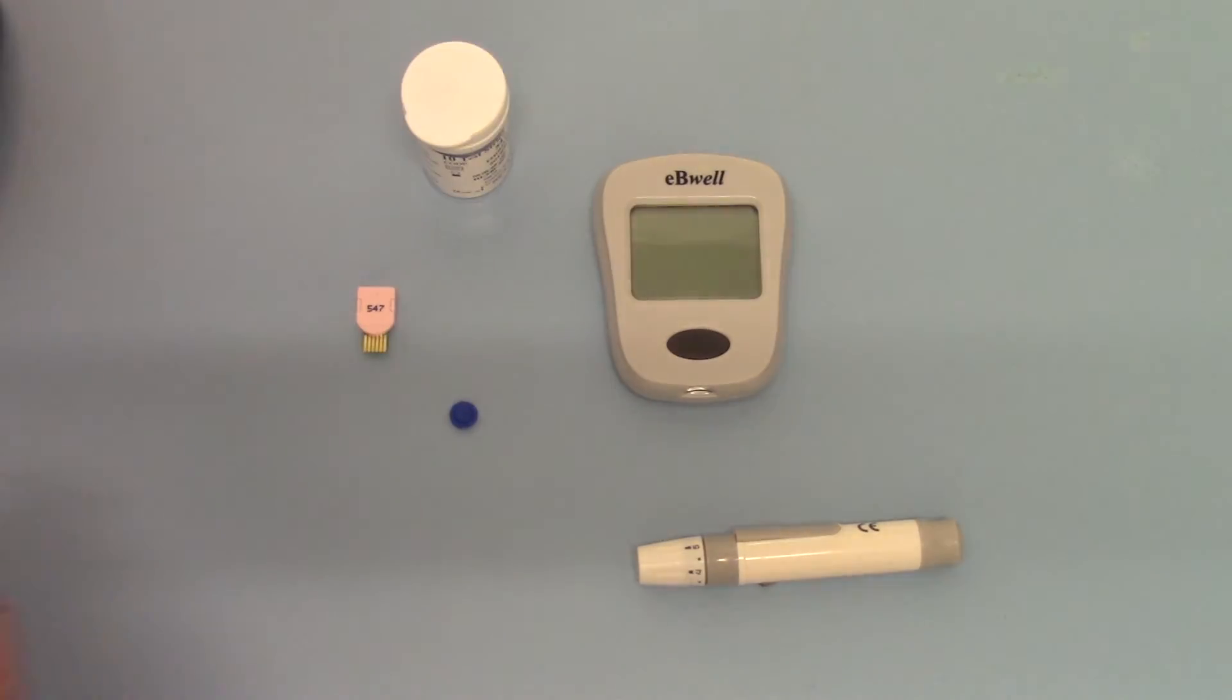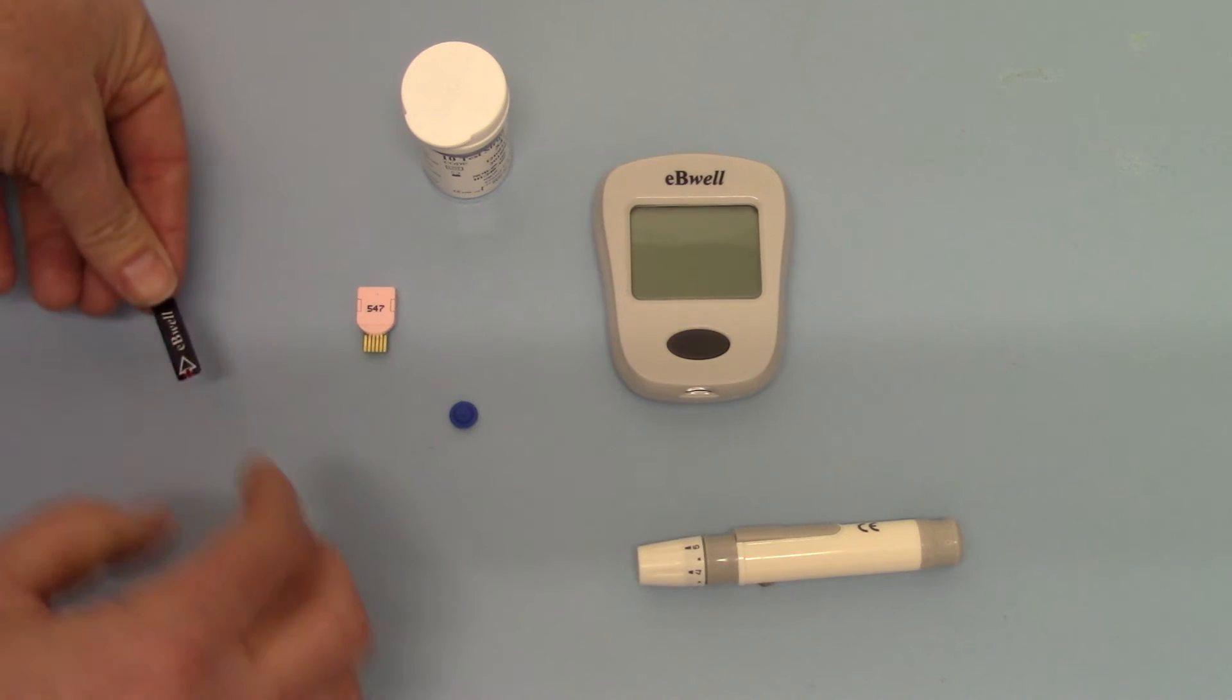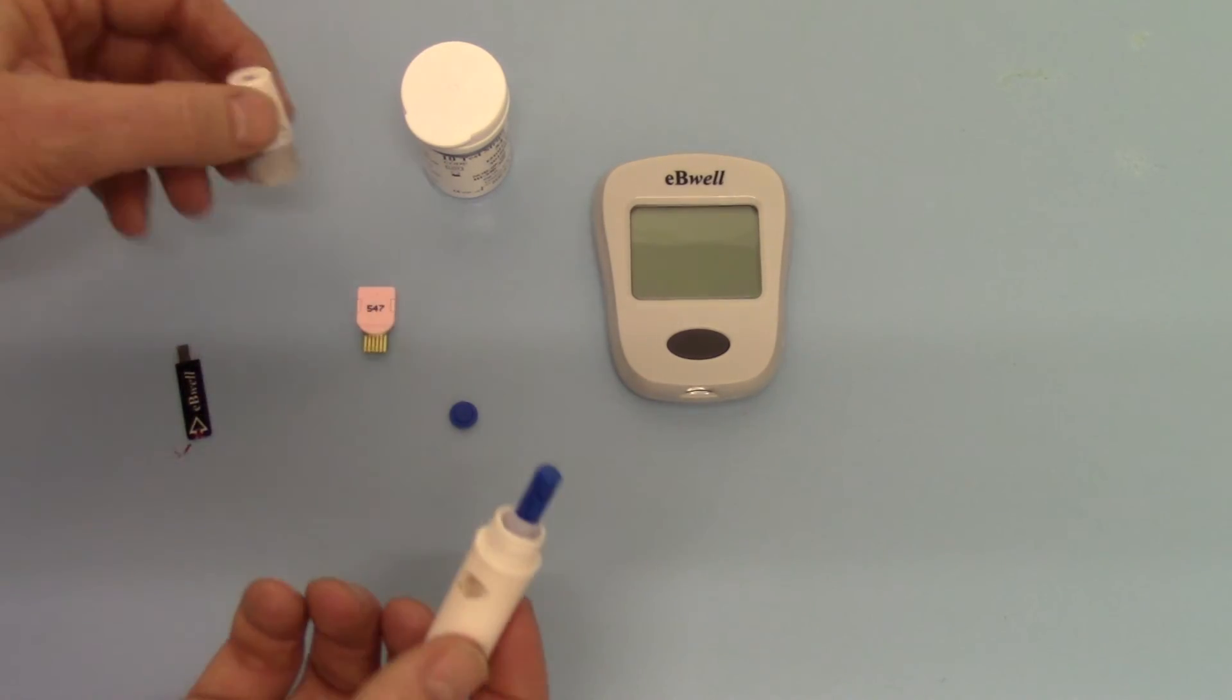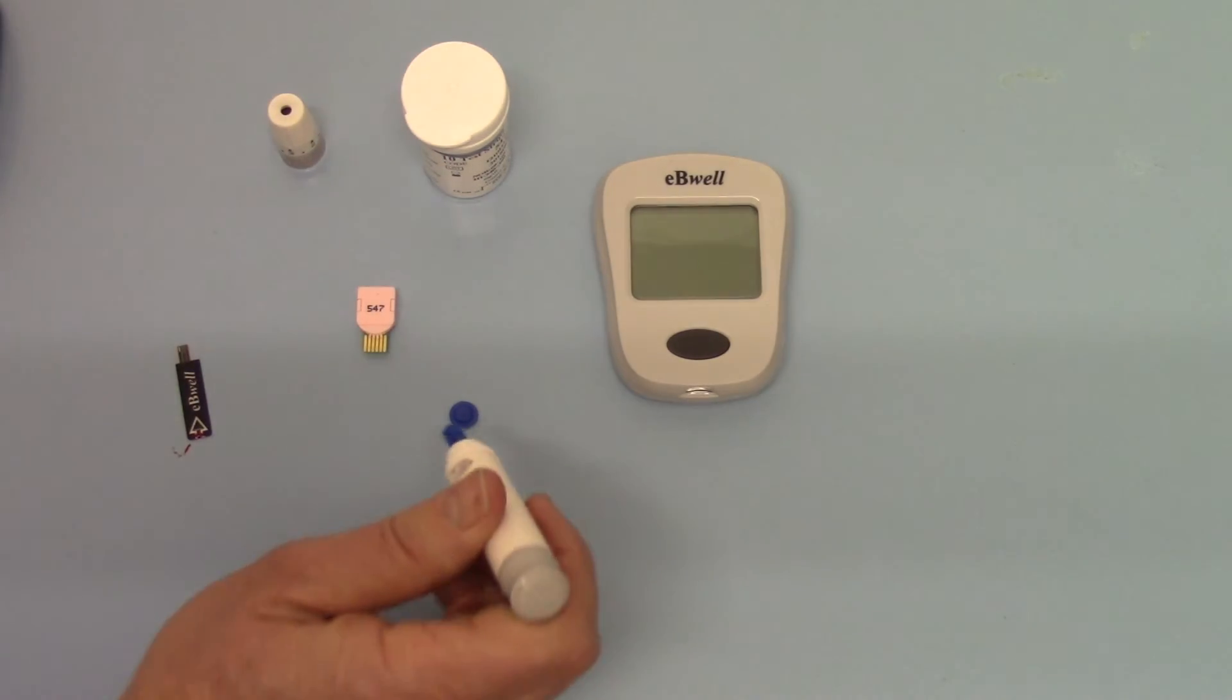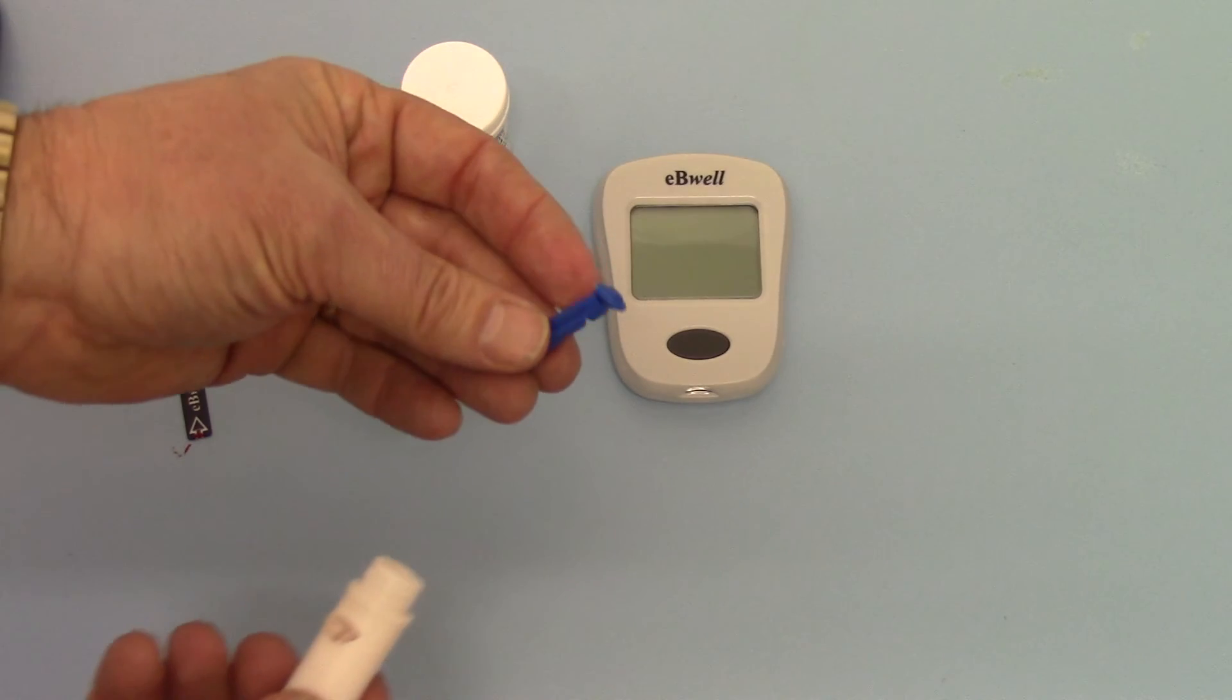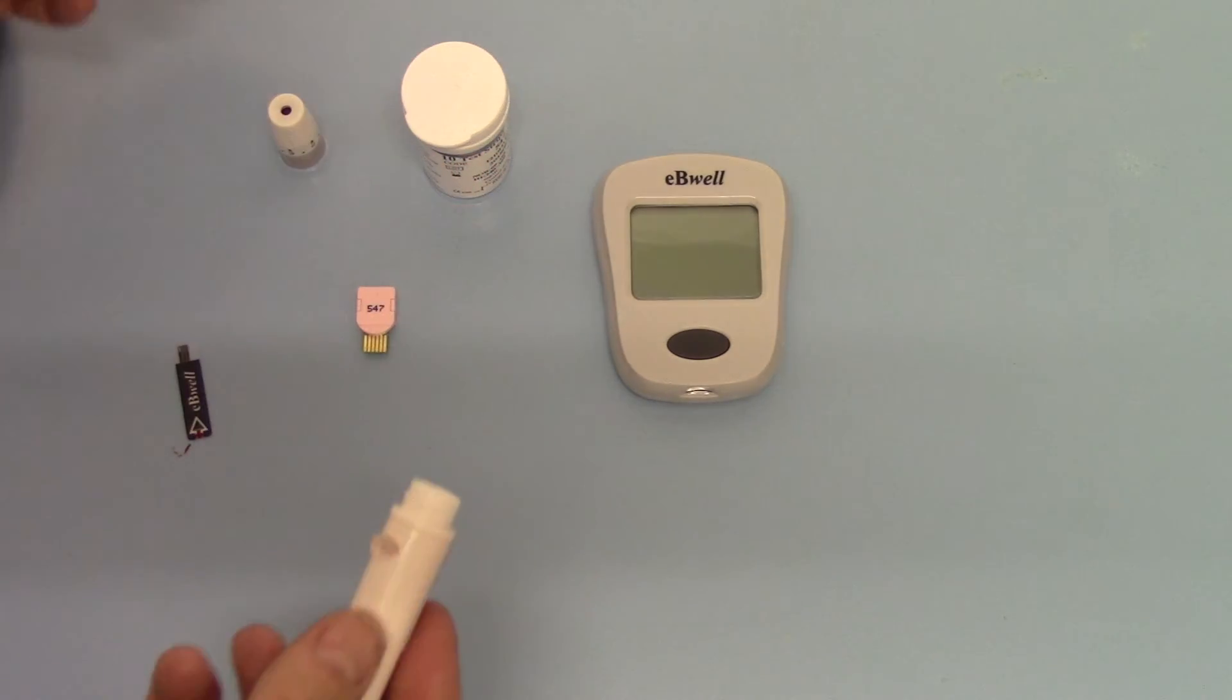The meter powers off instantaneously saving battery power and then to remove the lance from the lancing device, if we just unscrew this, push it into the cover, the lance can be safely removed and disposed of.